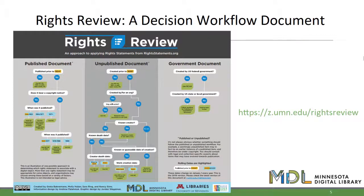To assist in assigning rights, our team has created a Rights Review Decision Workflow document. This document walks you through the questions you need to answer in order to arrive at an accurate rights determination. The document is a decision tree — start at the top to determine if your item is a published document, an unpublished document, or a government document. Each question requires a yes or no answer, and some questions will lead you to other questions. Note that this document is not legal advice; it is meant as a guide to help you make your own determinations.